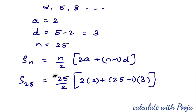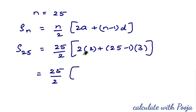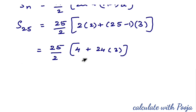Now substituting values: 25 divided by 2, into 2×2 = 4, plus 25−1 = 24, times 3. Next step: add 4 plus 24×3.